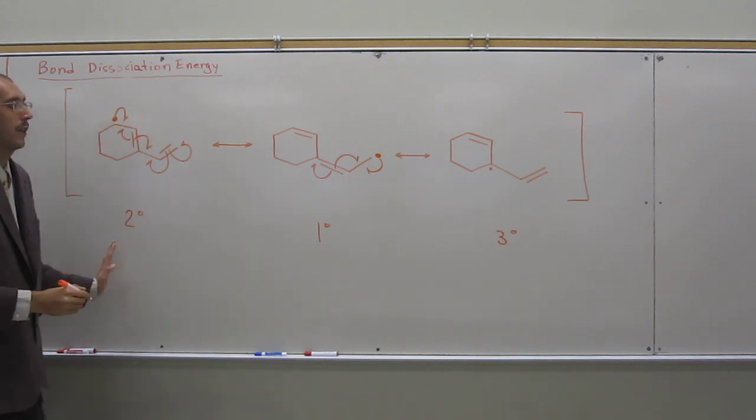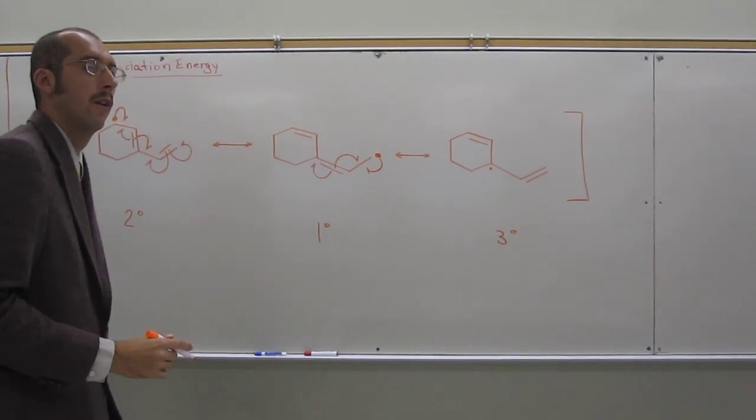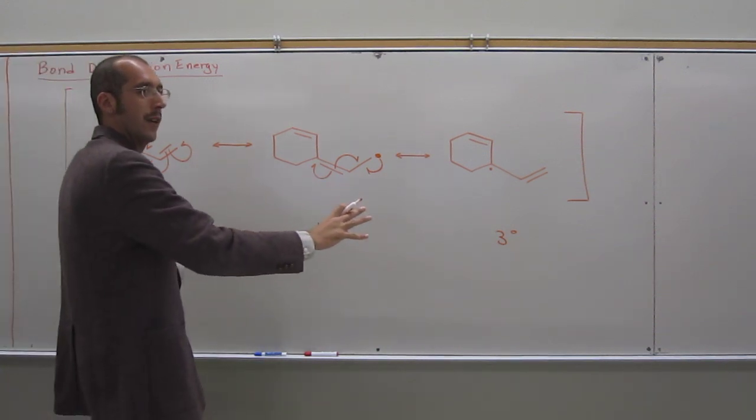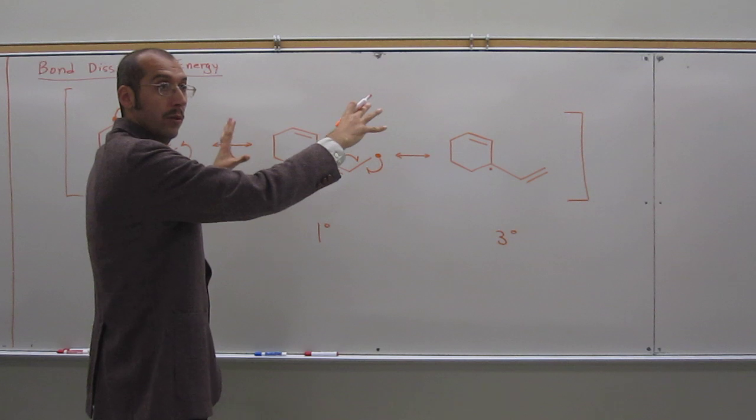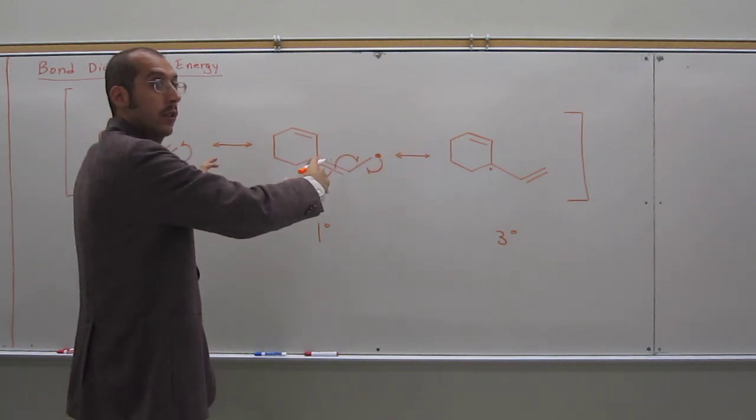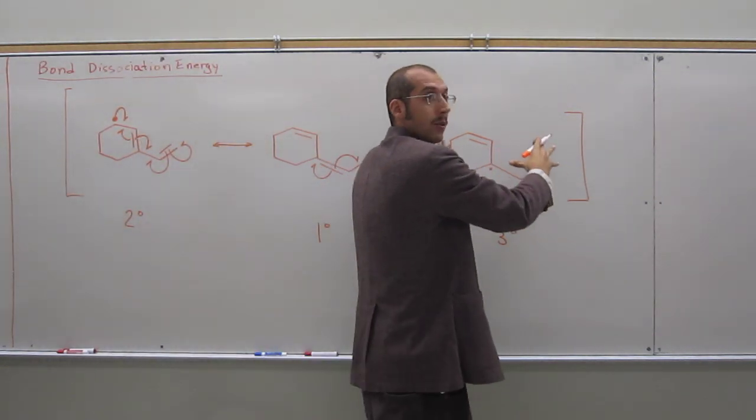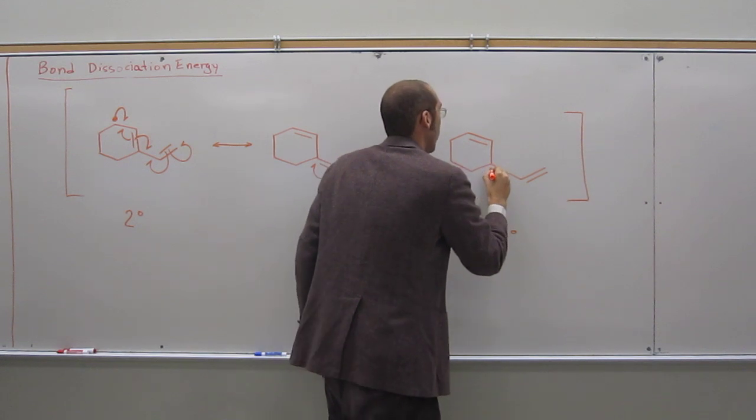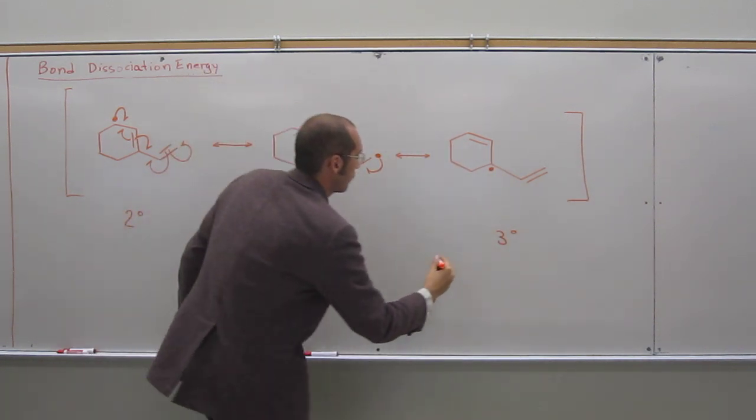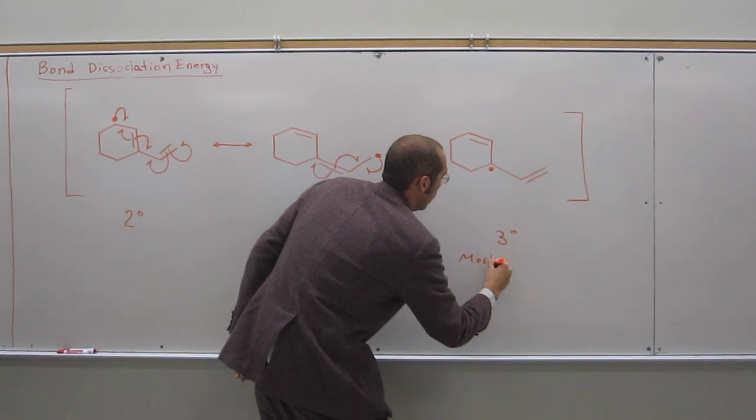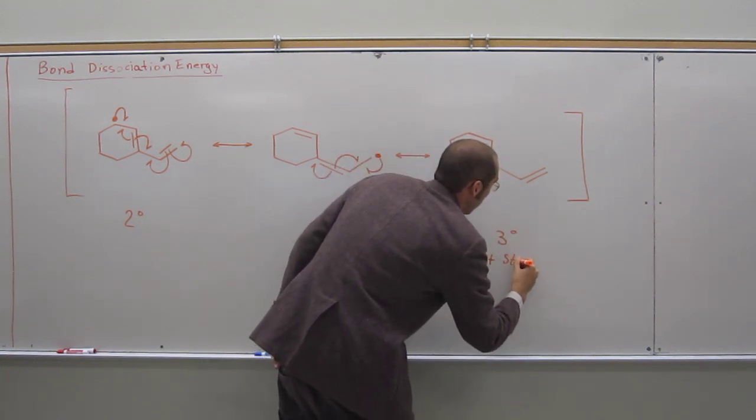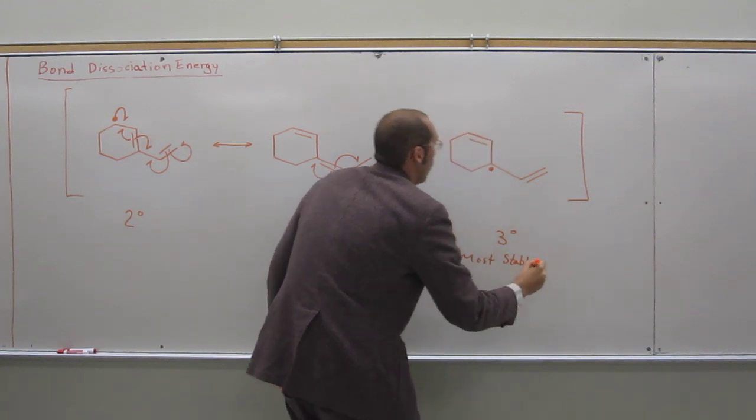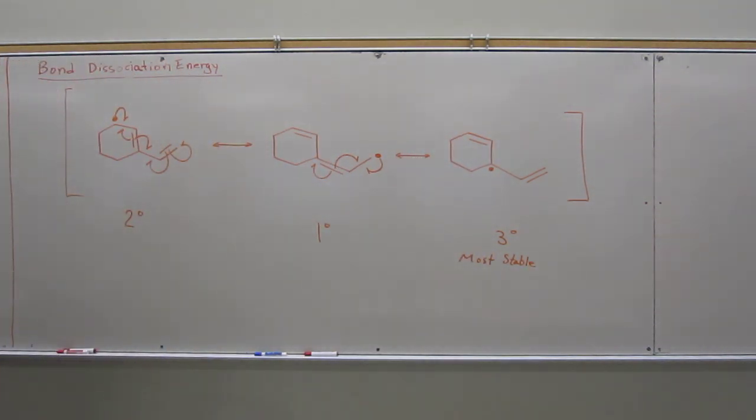Now, remember, these are all resonance structures of each other, right? So if we were to say, remember resonance is like a hybrid, right? So it looks like the actual structure looks like all of these structures, but it most looks like this one, right? Why? Because this is the most stable. That one's a little bit too. And it's a little bit. Right? And we should put that.